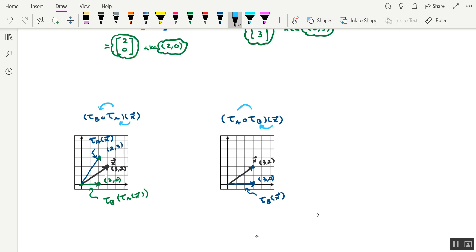What we do next is we apply T sub A, which is the reflection across line y equals x, which means that we're just going to switch the x and y coordinates of 3 comma 0 to get 0 comma 3. We'll connect it with the origin. And that right there would represent the vector capital T sub A of capital T sub B of x.